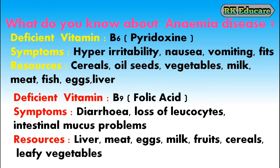When anemia is due to vitamin B9 (also called folic acid), the symptoms are diarrhea, loss of leukocytes and intestinal mucus problems. Liver, meat, eggs, milk, fruit, cereals and leafy vegetables are resources of vitamin B9 or folic acid.